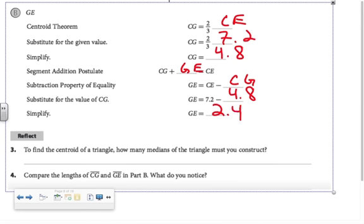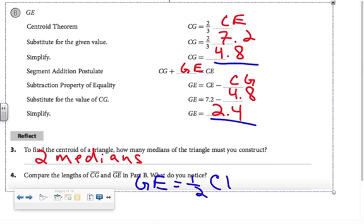I believe on the next screen I have an opportunity to show you a much simpler manner than the way the book would have you do it. In Reflect Problem 3, it says find the centroid of the triangle. How many medians must you construct? Since all three of them intersect at the same point, and I only need two segments to intersect to find a point of intersection, two medians is all I need. In part four, I'm asked to compare the lengths of CG and GE. What you would notice is that GE is half of CG.